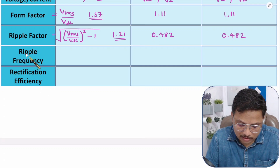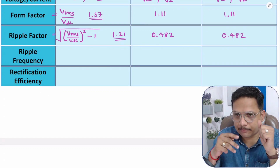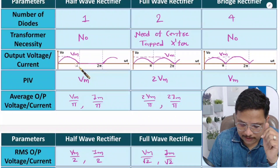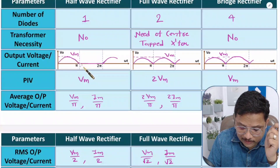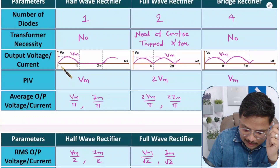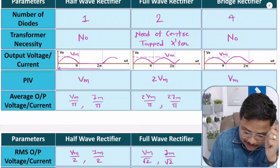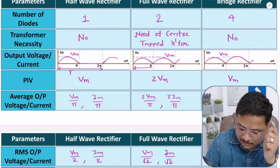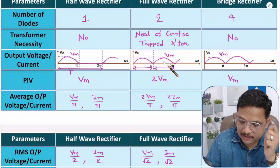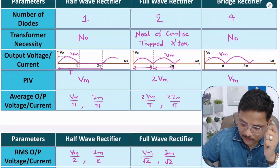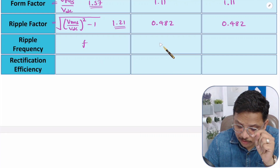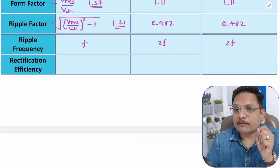Now regarding ripple frequency. Ripple frequency means how often the ripple occurs in the output. With a half wave rectifier, if the input AC frequency is f, then the ripple frequency is also f — one ripple pulse occurs per input cycle. But with a full wave rectifier, you can observe the ripple is occurring twice per input cycle, so the ripple frequency is 2f — double the input frequency.